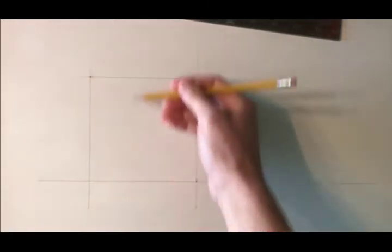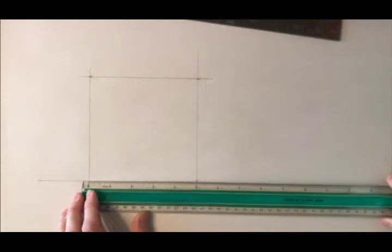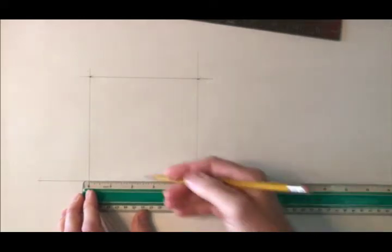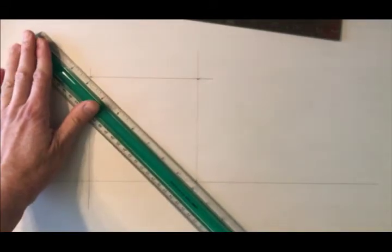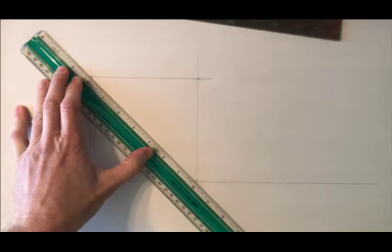Now I want to find the center of this line. I can simply measure that out, so I have five inches here. That's going to be two and a half inches. Let's say that we don't know exactly how big the square is though, and we need to find the center in a different way.